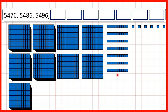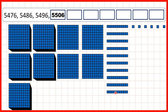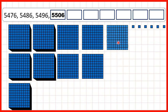If we're counting in tens, we're adding one ten each time. So adding another ten gives us 5,486, then 5,496. But if we add another ten, now we've got ten tens. And when we have ten tens, we can exchange those for one extra hundred.